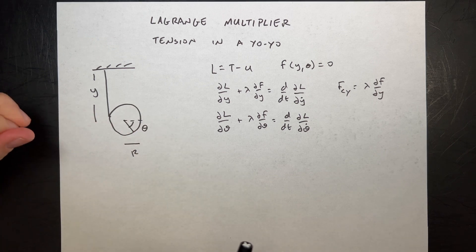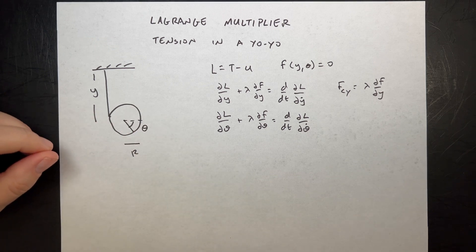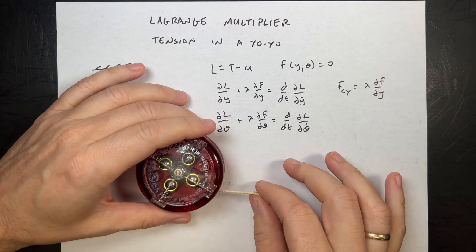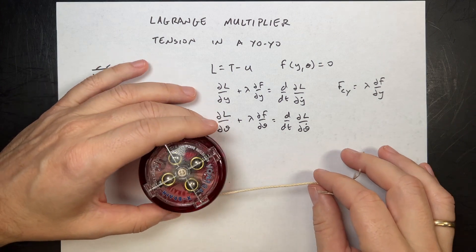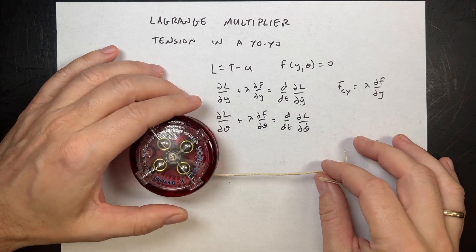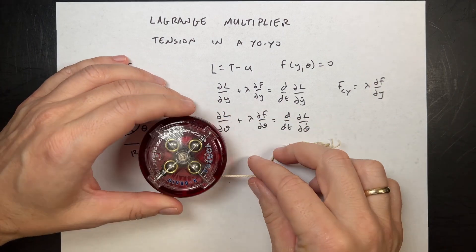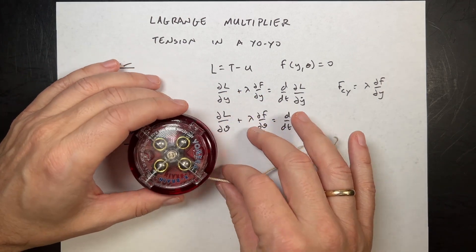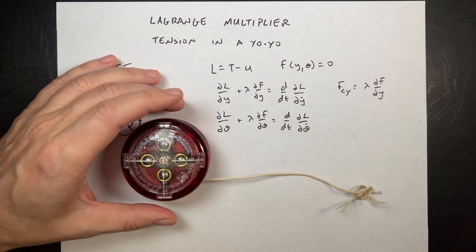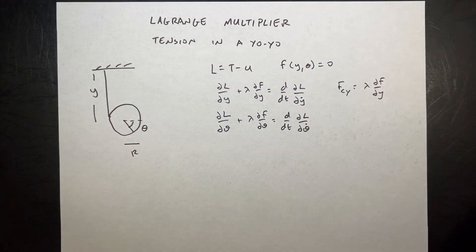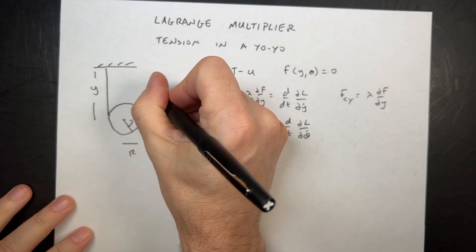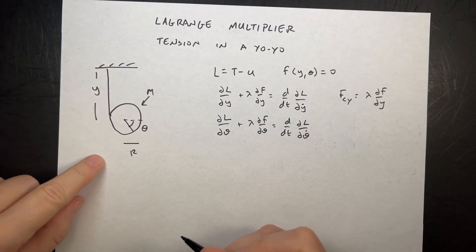I have a yo-yo — I actually do have a yo-yo right here — which, as I understand it, was originally a weapon. A yo-yo has the string wrapped around a radius smaller than the yo-yo itself. But I want to do just a falling disc: a disc with radius R and mass M. And I want to find the tension in the string as it falls.